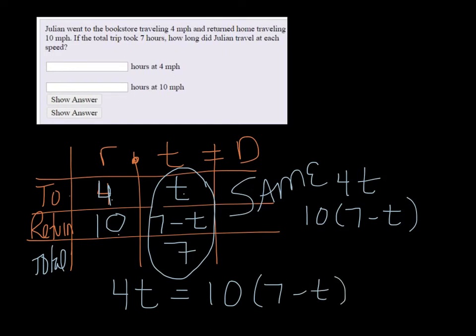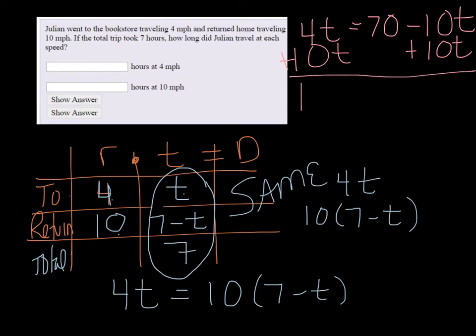And then we're going to distribute. So we get four t equals seventy minus ten t. I'm going to add that ten t over to the other side to get all our t's together. And I get fourteen t equals seventy. And we divide both sides by fourteen. And I believe that seventy divided by fourteen is five.